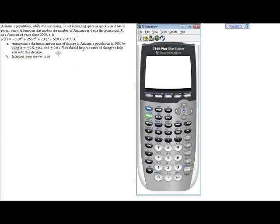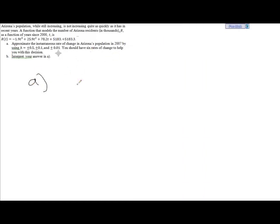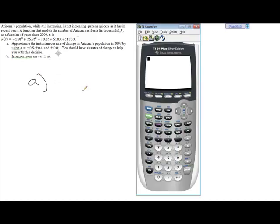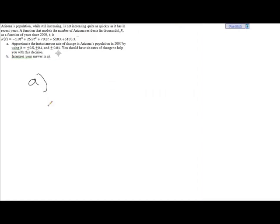Rather than having to build up a huge table and show these six rates of change and how they're calculated, we'll just summarize them. So what does it mean for h to be plus or minus 0.5? If I were to set up a table, my inputs would be one for 2007, which is seven years after the year 2000. So that would correspond to a t value of 7.